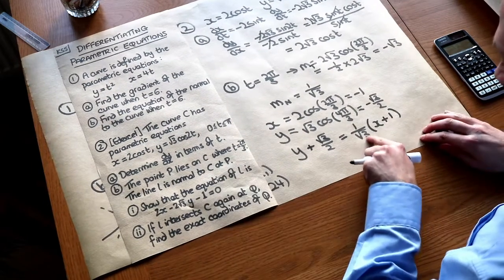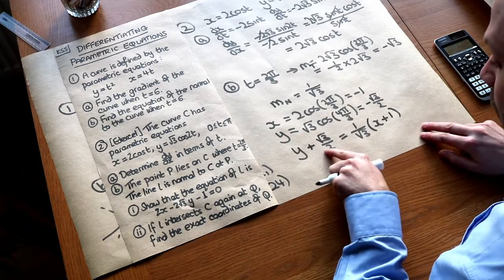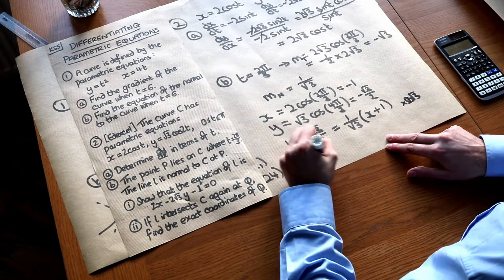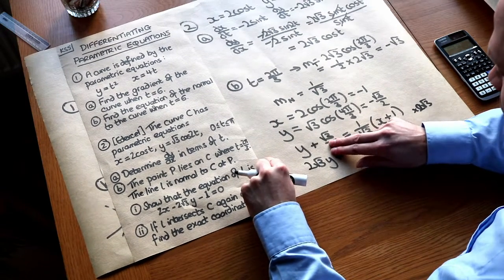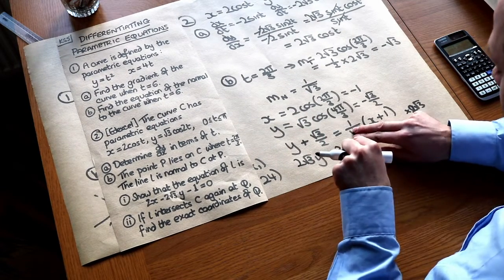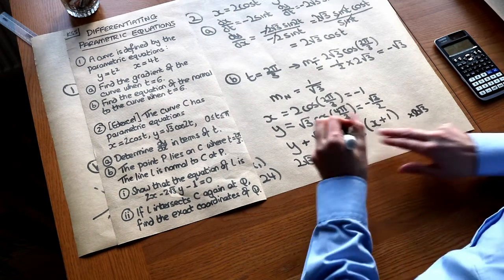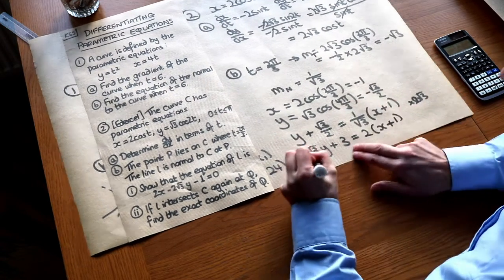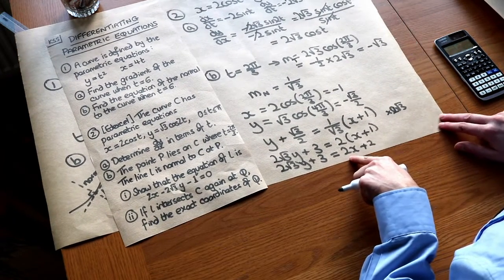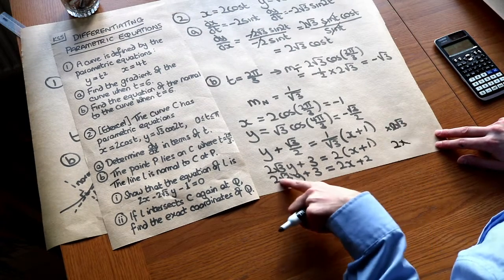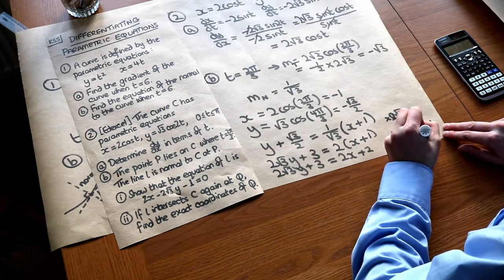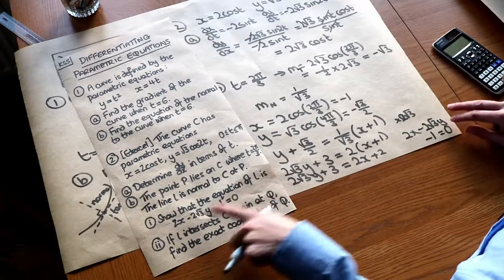Multiplying everything by 2 root 3 to clear fractions: this gives 2 root 3 y plus 3 equals 2 times x plus 1. Expanding that and rearranging to put everything on one side with x positive: we get 2x minus 2 root 3 y minus 1 equals 0. And that is indeed the equation we were expecting to show.